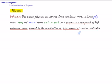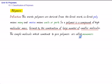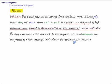The simple molecules which combine to give polymers are called monomers. And the process by which the simple molecules or the monomers are converted into polymers is called polymerization. So here we have to understand the meaning of three terms: polymers, monomers, and polymerization.